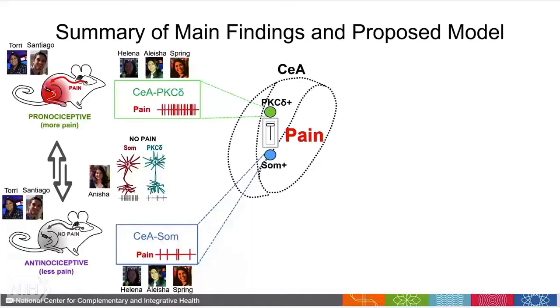We want to understand how this is happening in the central amygdala, and we take both an airplane view and a zoom-in view of the mechanism. At the zoom-in level, Anisha in the lab wanted to know if there was anything special about these cells to begin with. What she showed is that these cells are completely opposite in their activity: the somatostatin cells at baseline have more activity than the PKC delta cells, but in the context of pain this is totally reversed.